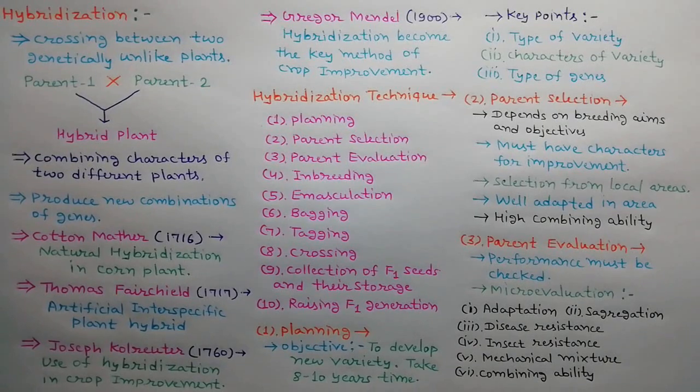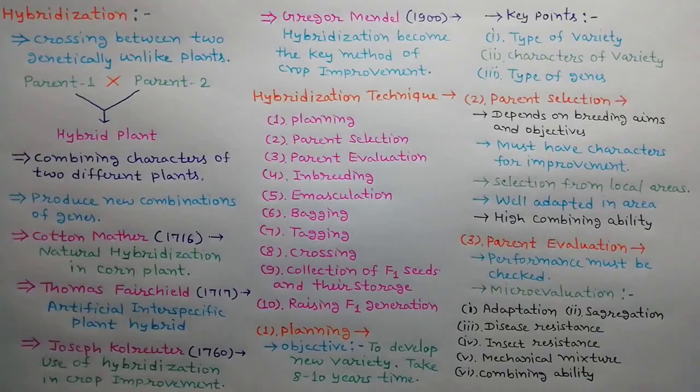The fourth step is inbreeding. It is essential for inducing homozygosity, for eliminating undesirable characters, and obtaining inbreeds.